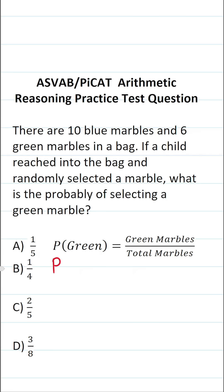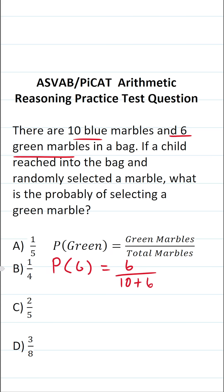The probability of selecting a green marble is going to be equal to the number of green marbles in the bag. According to the problem, there are 6 green marbles in this bag, divided by the total number of marbles in the bag. As it happens, there are 10 blue marbles and 6 green marbles in the bag.